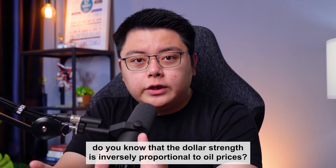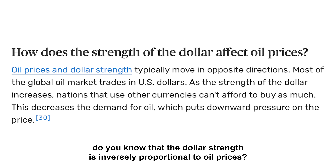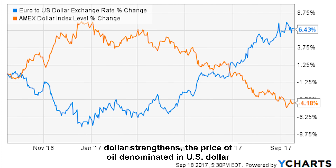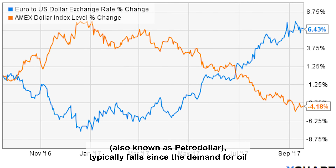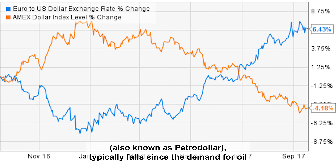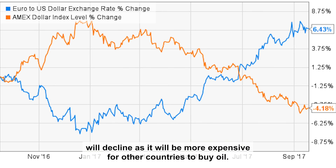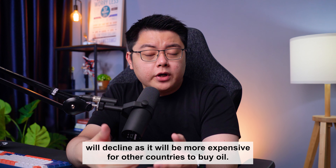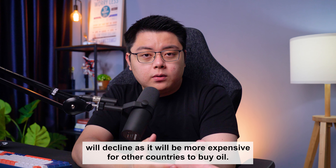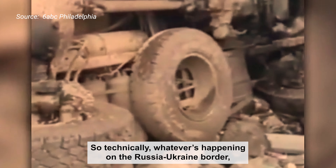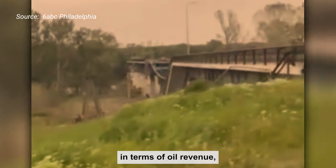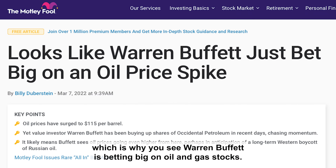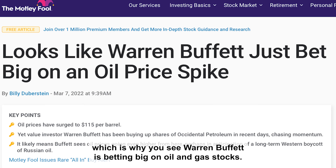Did you know that dollar strength is inversely proportional to oil prices? This means that as the US dollar strengthens, the price of oil denominated in US dollars — also known as the petrodollar — typically falls, since demand for oil will decline as it becomes more expensive for other countries to buy. So whatever is happening on the Russia-Ukraine border actually helps the US in terms of oil revenue, which is why you see Warren Buffett betting big on oil and gas stocks.